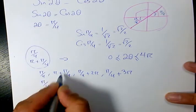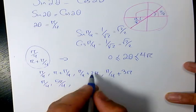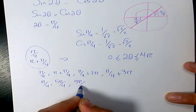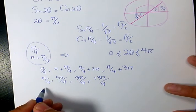So we have pi over 4. Here we have 5 pi over 4 if you do the common denominator. Here we have 9 pi over 4, and this one is going to be 13 pi over 4. So these are the four answers.